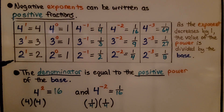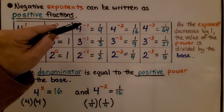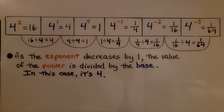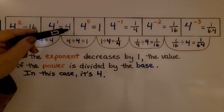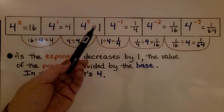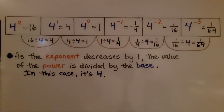Same for 3 and 2. The denominator is equal to the positive power of the base. We have 4 to the second power, that's 4 times 4, that's equal to 16. And 4 to the negative 2nd power is equal to 1 sixteenth — it's 1 fourth times 1 fourth. 4 to the negative 1st power is 1 fourth, so 4 to the negative 2nd power is equal to 1 sixteenth. We have 4 to the negative 1 equaling 1 fourth, 4 to the negative 2nd power equaling 1 sixteenth, and 4 to the negative 3rd power equaling 1 sixty-fourth.